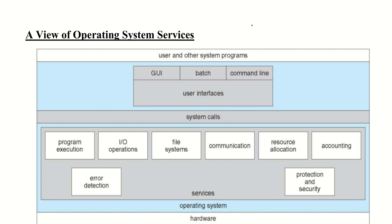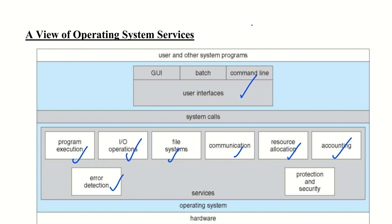The operating system services include: user interface, program execution, I/O operations, file system manipulation, communication, resource allocation, accounting, error detection, and protection and security.